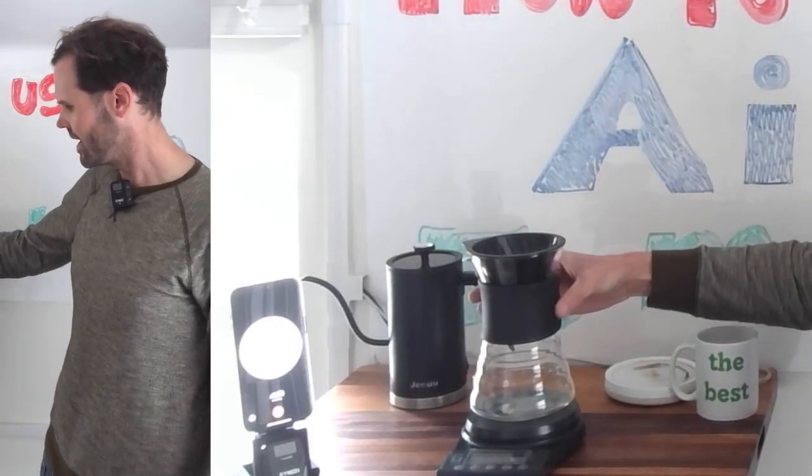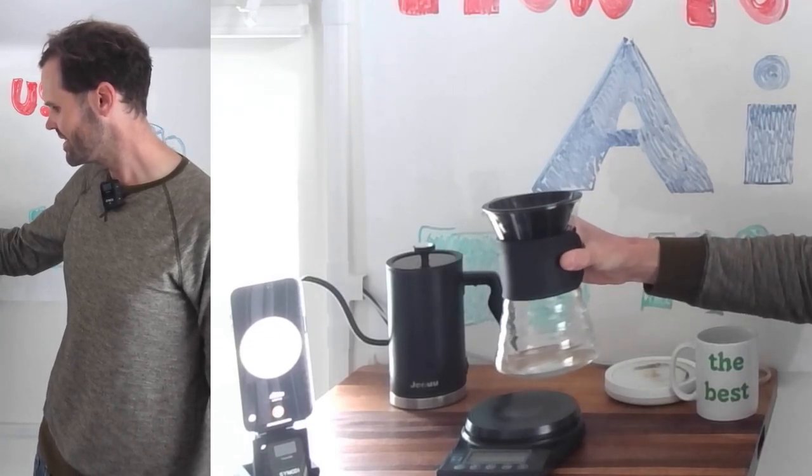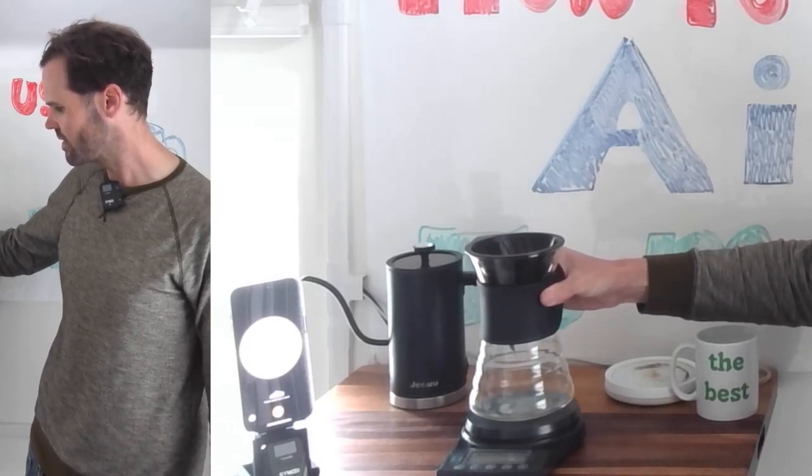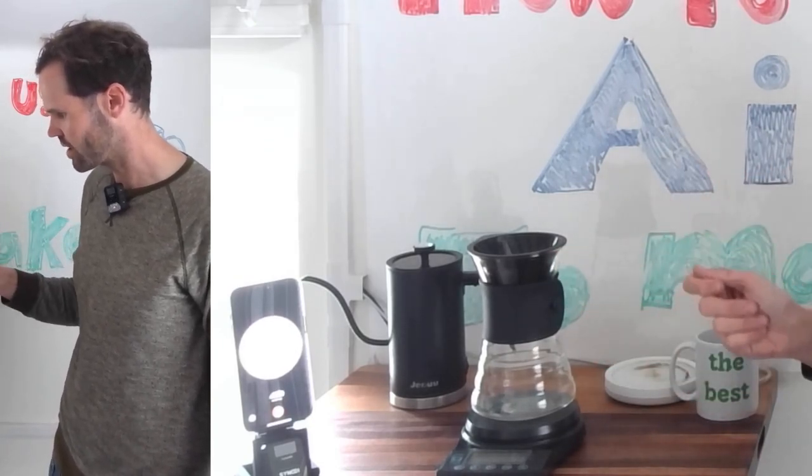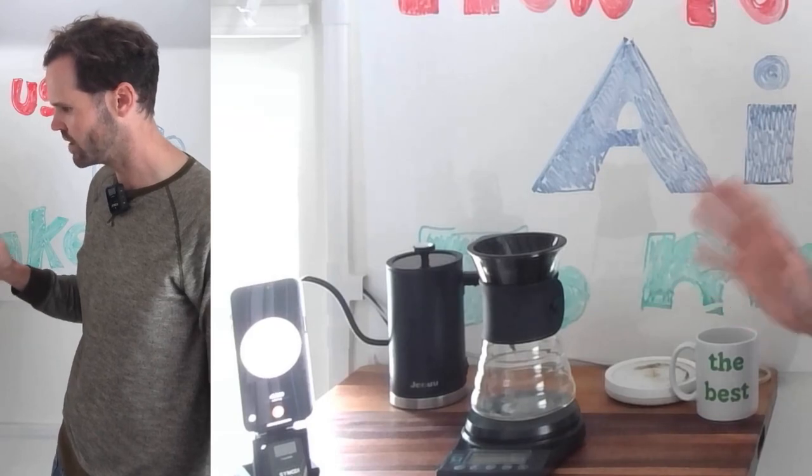How do I use my Hario V60 to make 500 milliliters of coffee? I've ground the beans now. I have the hot water. I have some filters. What do I do next?